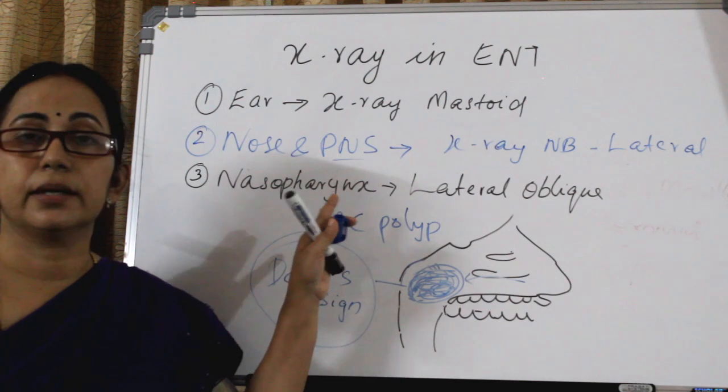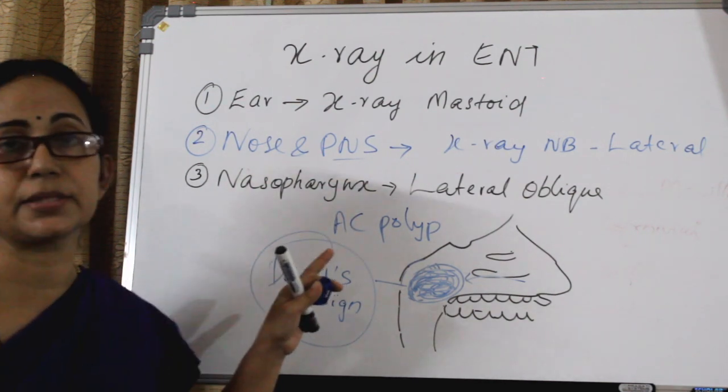Regarding X-ray nasopharynx, let us see some X-rays. Do not call it an X-ray nasal bone or X-ray skull. This is X-ray of nasopharynx. This is a case of an eight-year-old girl complaining of recurrent snoring and mouth breathing. This is X-ray nasopharynx lateral view, which is used to grade adenoid hypertrophy.